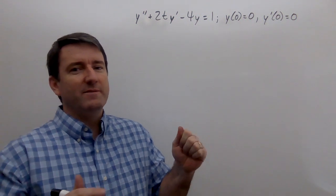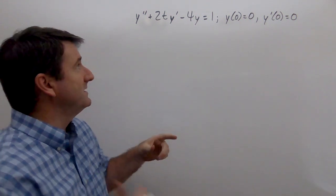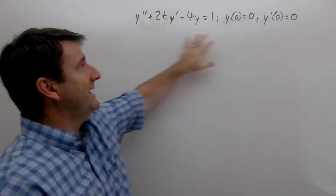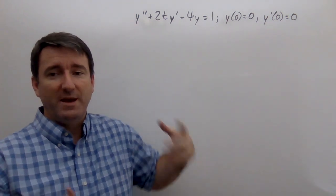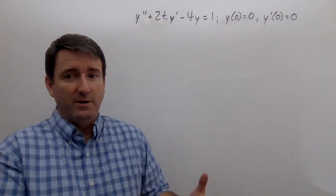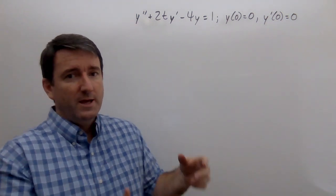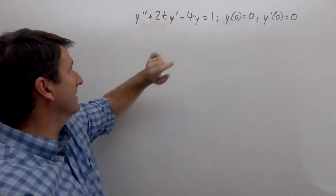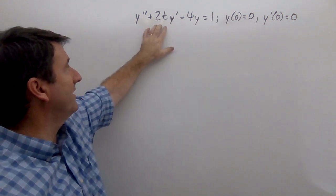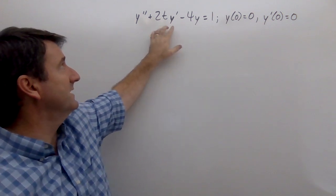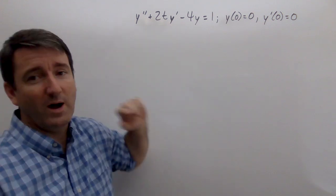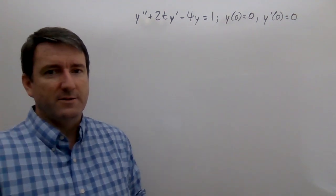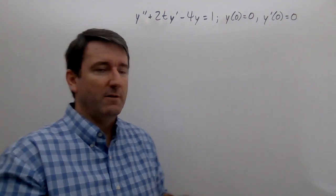In this example, we're given an initial value problem that we can't solve using the methods we learned earlier in the course. That's because of this t right there. Because we have a variable coefficient on y prime, we're going to need to use the Laplace transform in order to solve this.